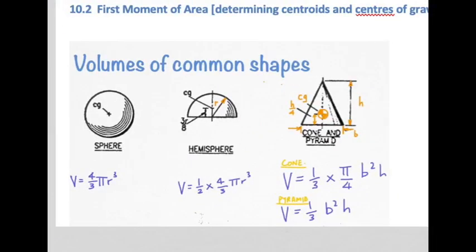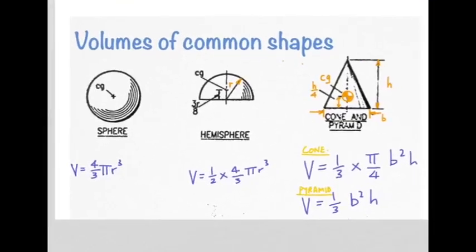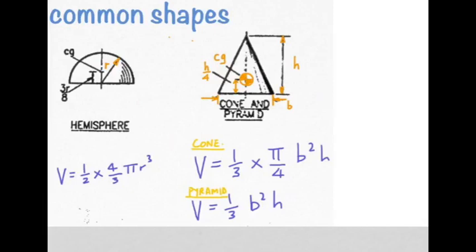Now let's focus on those three shapes. First of all, we're going to need to know their volumes. The volume of a sphere is four over three pi r cubed, r being its radius. A hemisphere is exactly half of that. The volume of a cone, remember a cone is the one with a round base, so the volume of the cone is one-third times pi over four b squared h, b of course is the diameter of the base of the cone.